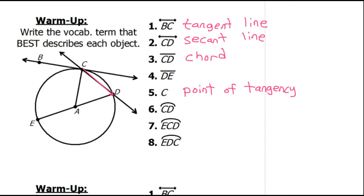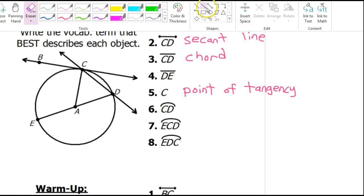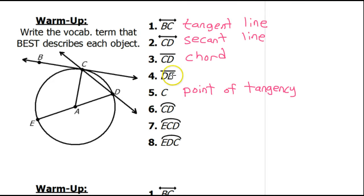Now, technically, problem number 4 is also a chord. It's just that there is a more specific name for it. Segment DE is also a segment that begins and ends on the circle. However, because it passes through the center of the circle, that makes it a very specific, special chord called the diameter.